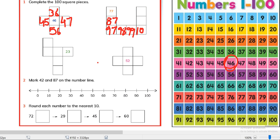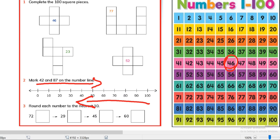Now next part is mark 42 and 87 on the number line. First we will tell our students that when we go from left to right numbers increase, and when we go from right to left they decrease. So we have increasing trend from left to right. Number 42: 40 is here, 42 will be here because 42 is 2 greater than 40. And then 87 would be somewhere here close to 90. Now round each number to the nearest 10.